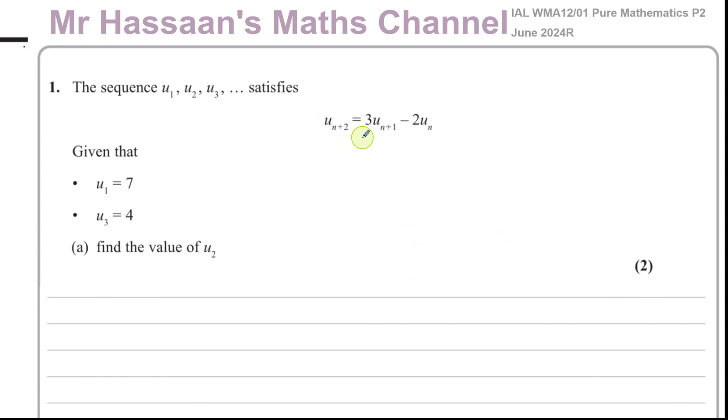Basically, what this type of sequence requires is you have the two terms before the term you're trying to find. They're saying that uₙ₊₂—you have a term here and you have a term here and you have a term here—this term depends on these two terms. So uₙ₊₂ equals 3 times uₙ₊₁, so basically this is the term before this term. So this term here is equal to 3 times the term before it minus 2 times the term before that.